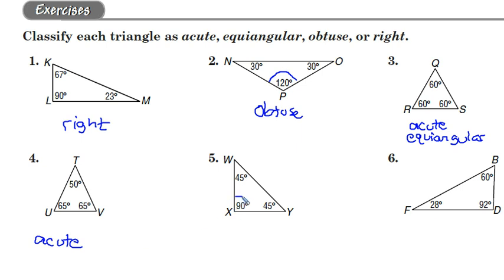Number five, we have a right angle down here, therefore making this a right triangle.